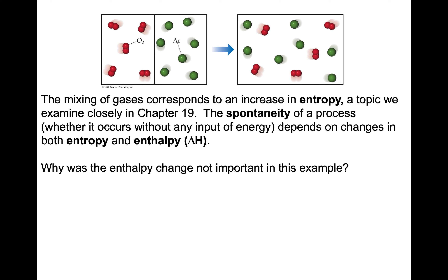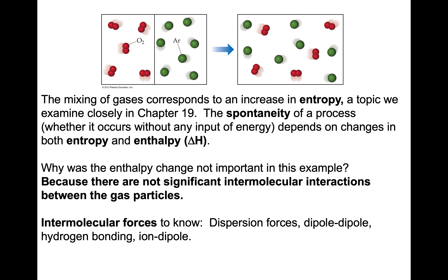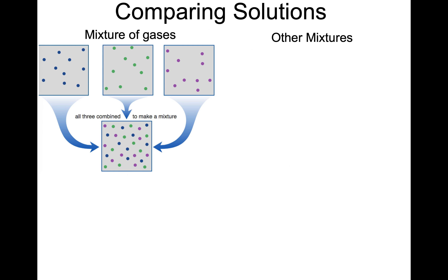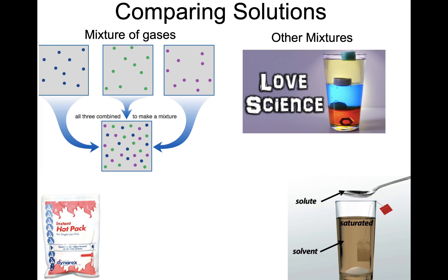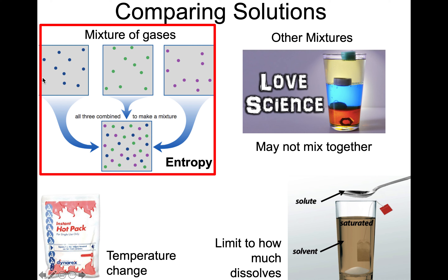In this case, I would say the enthalpy change was not important because we don't have significant intermolecular attractions between the gas particles. But we know we will have examples where we have significant attractions, and enthalpy will be important because we know about different intermolecular forces and how we may have to identify whether a molecule is polar by analyzing the Lewis structure and considering the predicted geometry. Now when comparing solutions, we can mix together gases, but we have other even more interesting mixtures — perhaps they don't mix at all, maybe there's a temperature change, maybe there's a limit to how much dissolves. Entropy is an important factor in simple mixing, but in these other cases, enthalpy is also important.